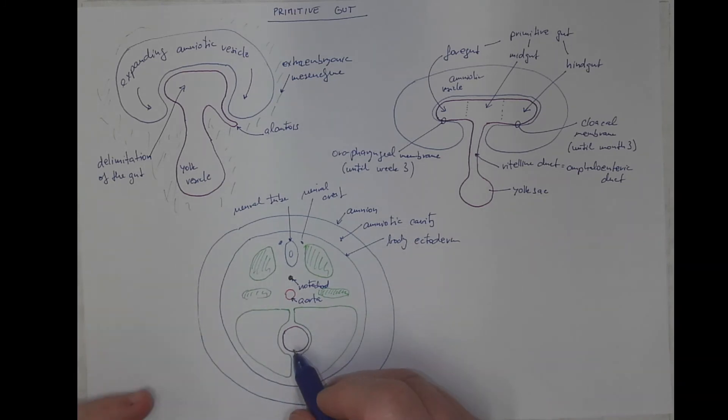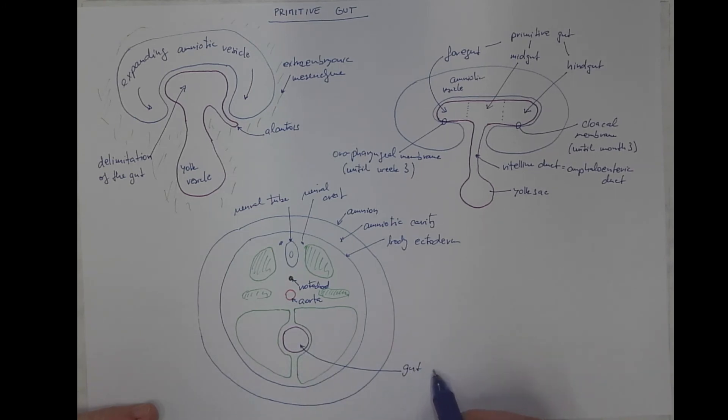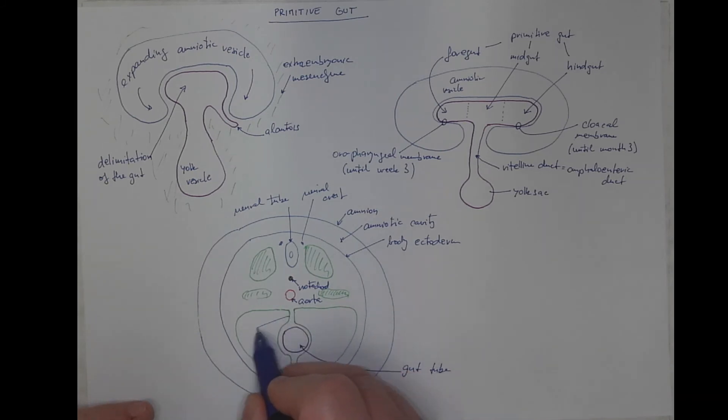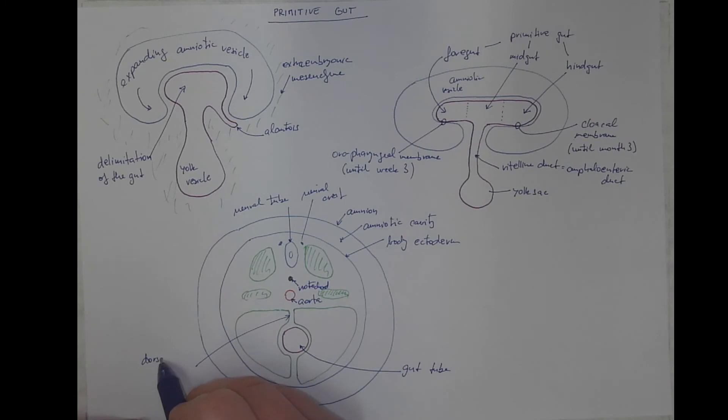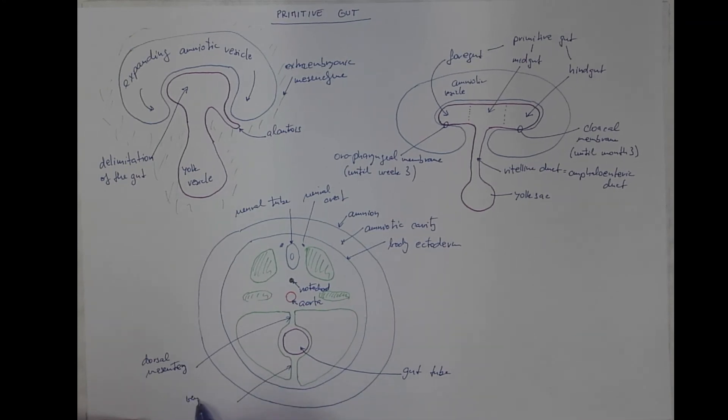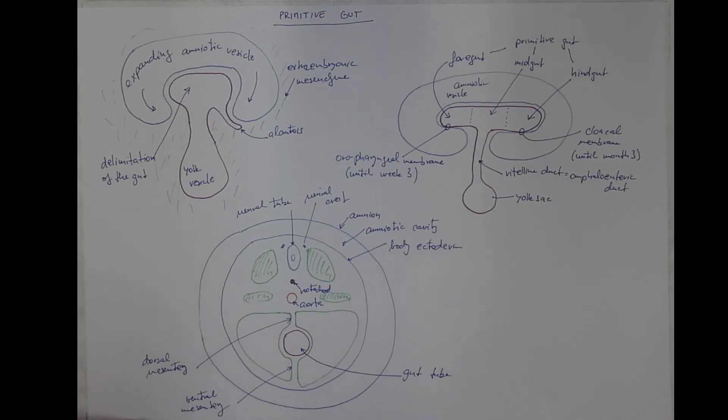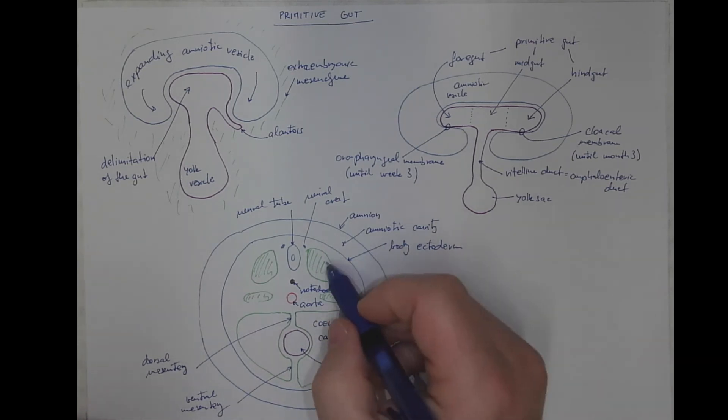But moreover this would be the gut tube in general hanging on the dorsal mesentery and the ventral mesentery, surrounded by the coelom body cavity. That's the mesodermal body cavity.